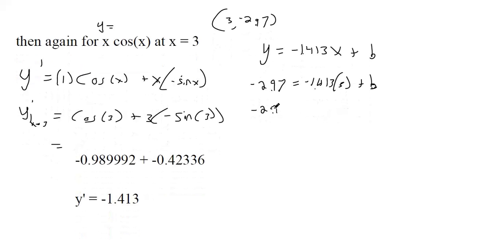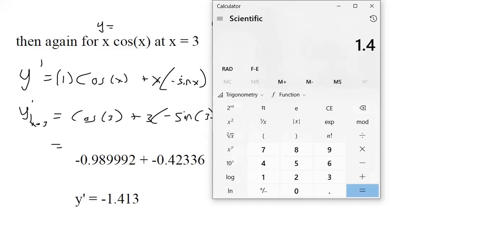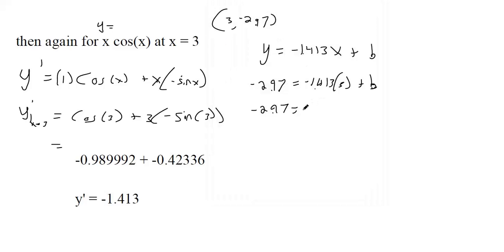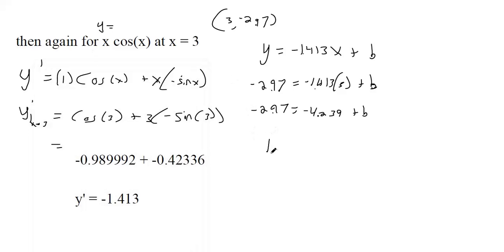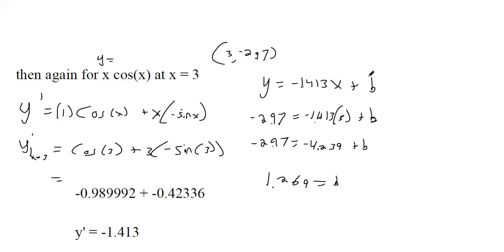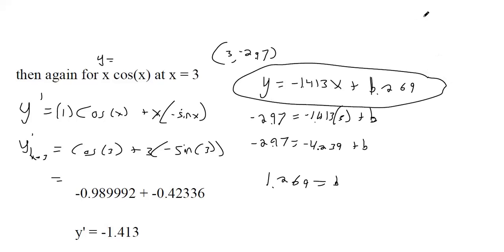So −2.97 = −1.413·(3), which is −4.239. Adding 4.239 to both sides gives b ≈ 1.269. So plugging 1.269 in as the y-intercept gives the full equation of the tangent line.